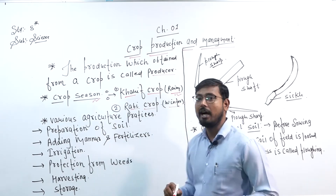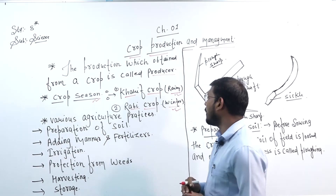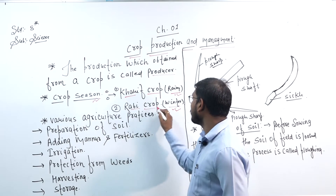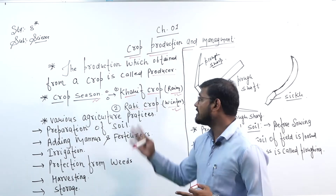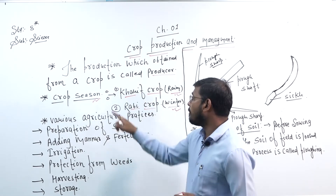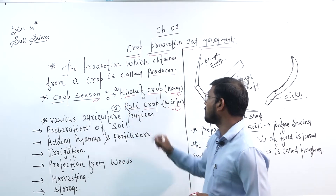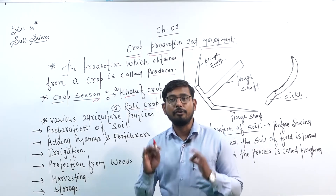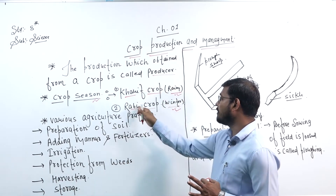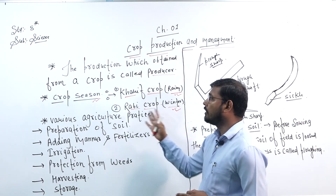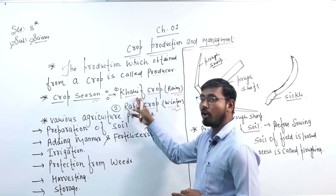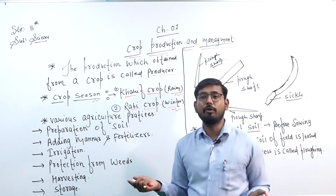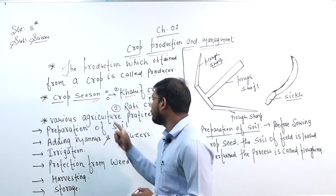So the two crop seasons are: first, Kharif crop which is grown in the rainy season, and the second is the winter crop season. These two are the main crop seasons.